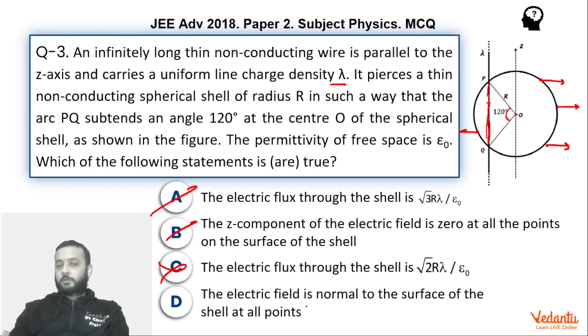Electric field is normal to the surface of the shell at all points - this is wrong because if you see, normal at this point is in this direction, this is the direction of the normal, whereas at this point the electric field will be in this direction. So you can see that this is not along the normal.